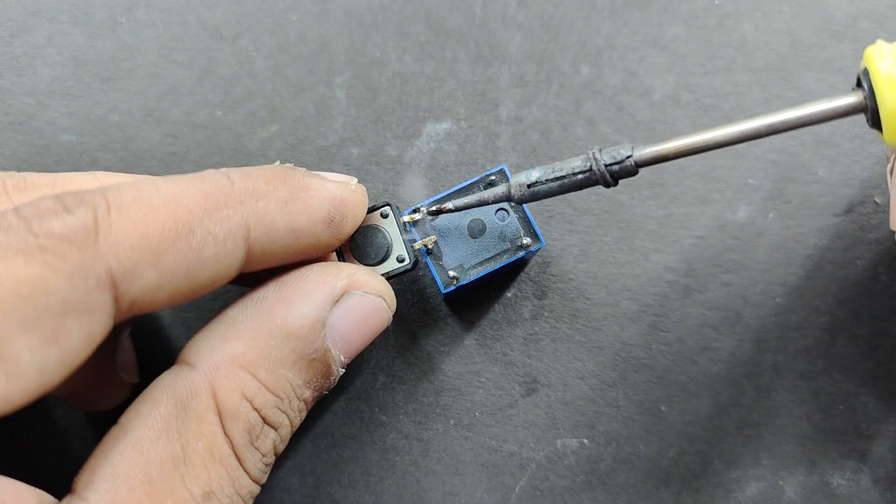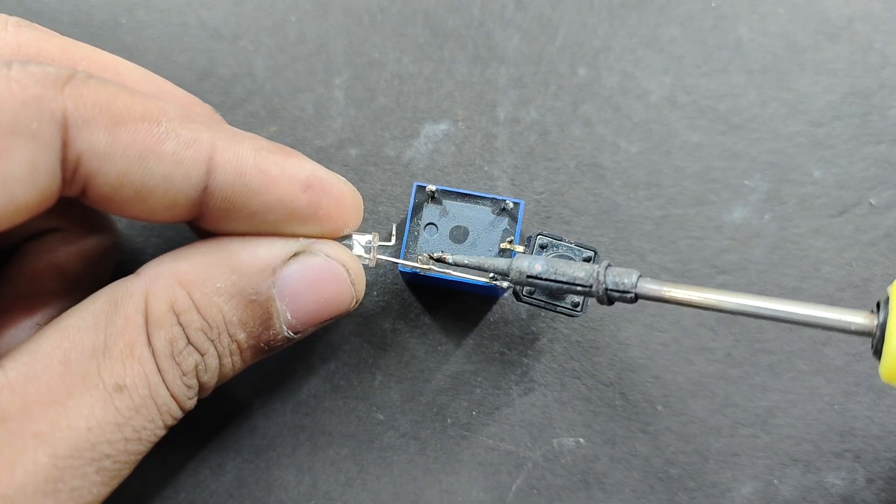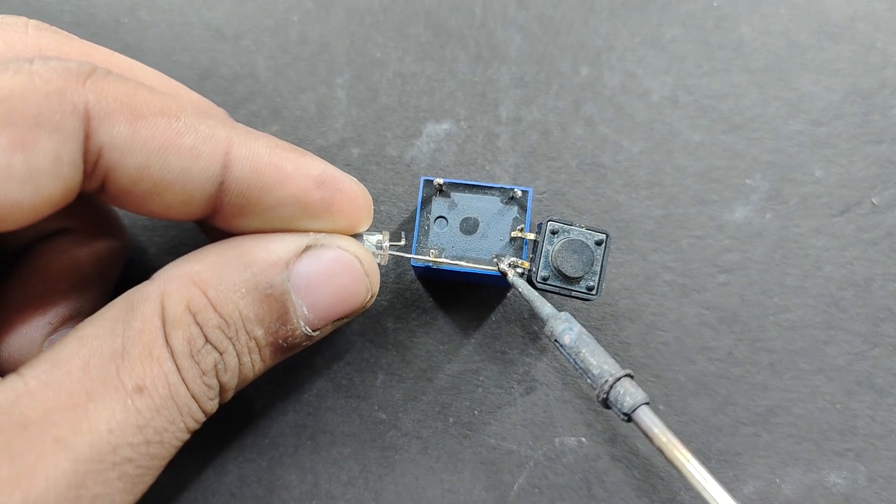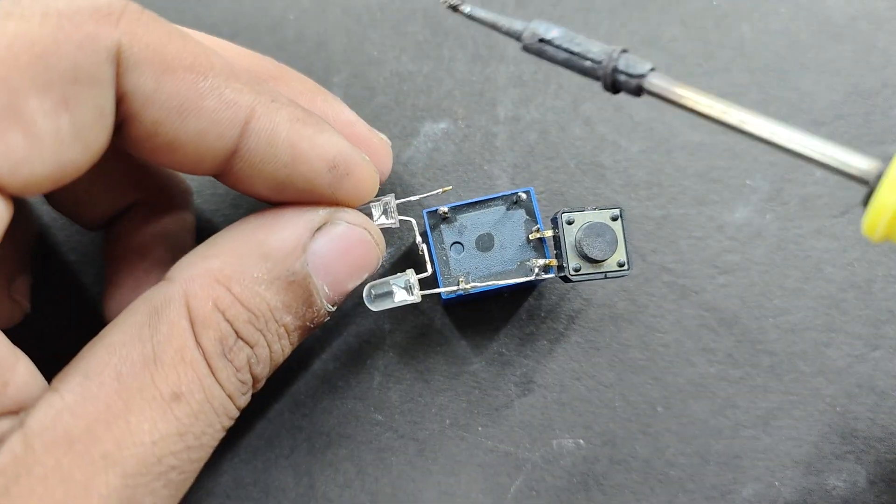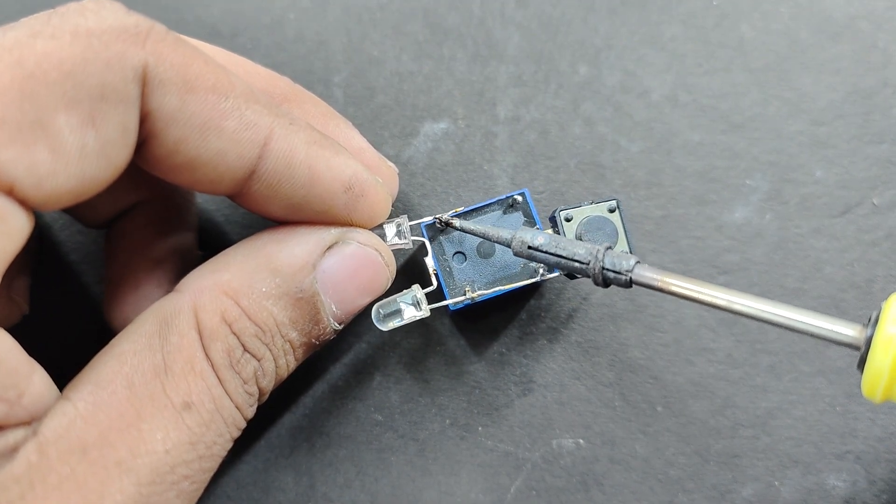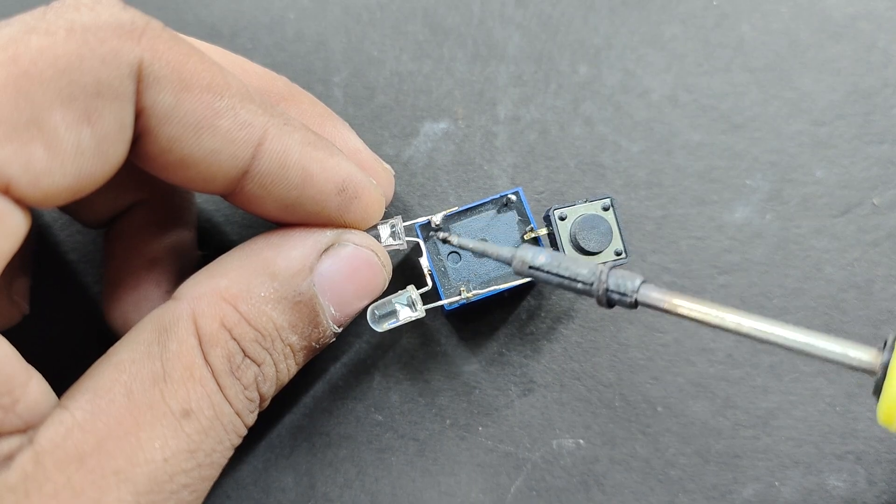Then connect the green LED to the circuit with its negative terminal connected to pin numbers 1 and 4. Now connect the red LED with the negative terminal connected to pin number 5 and the positive terminal connected to the positive terminal of the green LED.